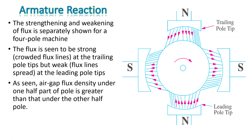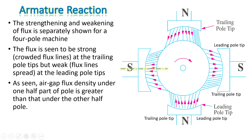The strengthening and weakening of flux is separately shown for a four-pole machine. Flux is strong at the trailing pole tips but weak at the leading pole tips, indicated by crowded and spread-out flux lines respectively. The air gap flux density under one half of the pole is greater than the other half — so one half has a strong magnetic field and the other half has a weak magnetic field.